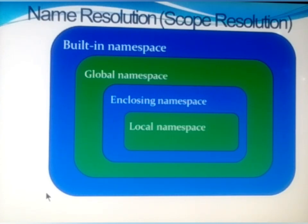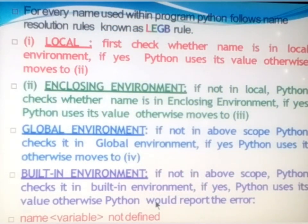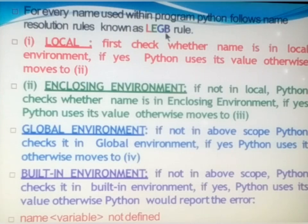Python uses four different environments to use variables: built-in namespace, global namespace, enclosing namespace, and local namespace. When you access a variable from within a program or function, Python follows a name resolution rule — that is the L-E-G-B rule.